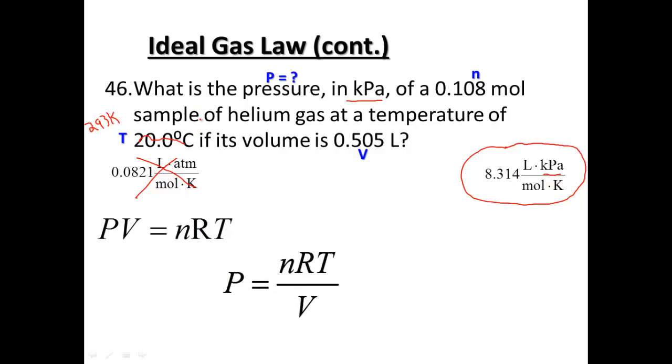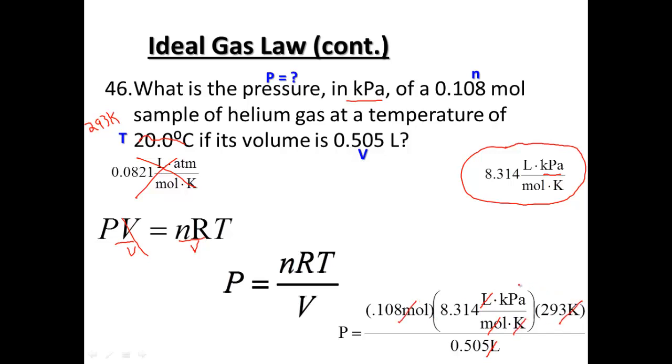So to plug in our units, n times R times T over V. Now we'll notice with our R unit, that liters cancel liters, moles cancel moles, kelvin cancels kelvin, and we're left with our units kilopascals. Numbers on top are multiplied, numbers on bottom are divided, and we get about 520.97. Sig fig wise, we could round it to 521 kilopascals.